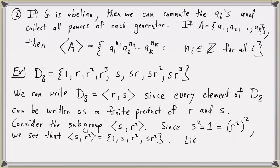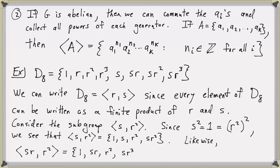Likewise, the subgroup generated by SR and R² will contain the identity — since R² times itself equals the identity — and the generators SR and R². Multiplying SR times R² gives SR³, and further products simplify to one of these four elements: the identity, SR, R², and SR³. For example, R² composed with SR³ gives SR.